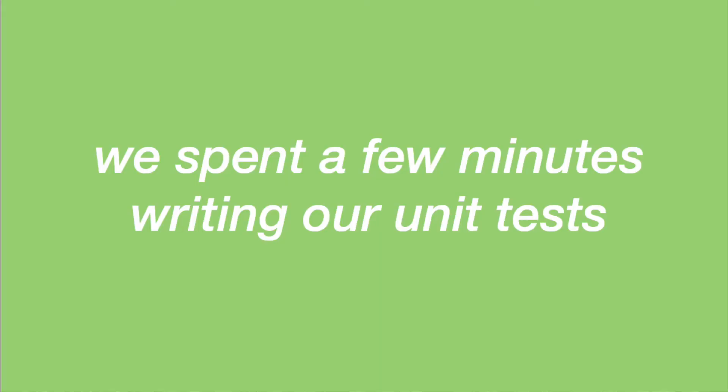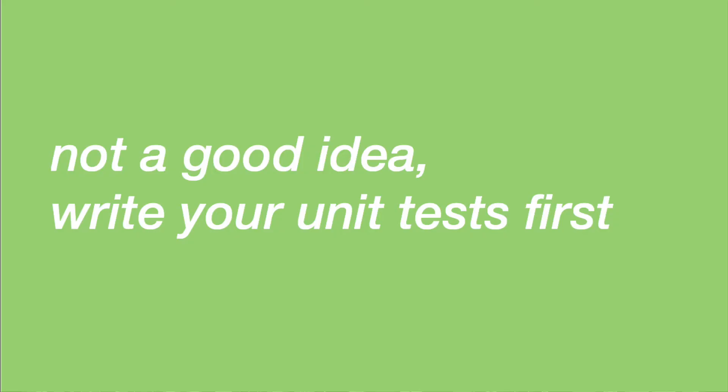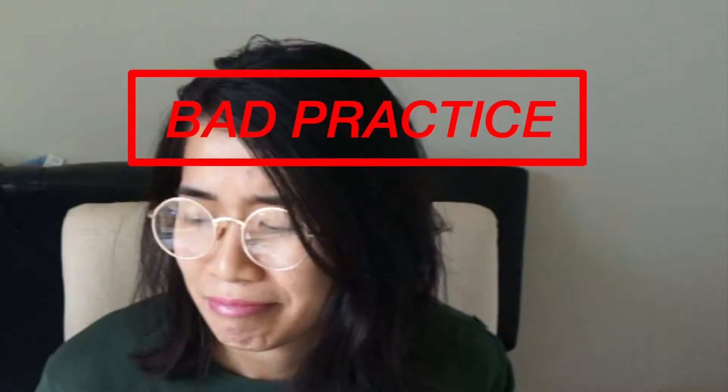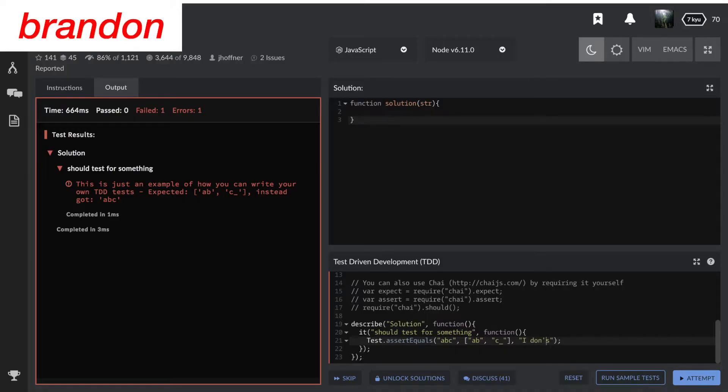Wait, is it telling us that we should write our own unit tests right here? Usually they have their own unit tests. You put ABC and then your expected outcome will be returned here. I'll learn how to write unit tests later. Let me just run the sample test to make sure it's working. I'm going to put like a funny message here to motivate me. I don't suck. Or do I?